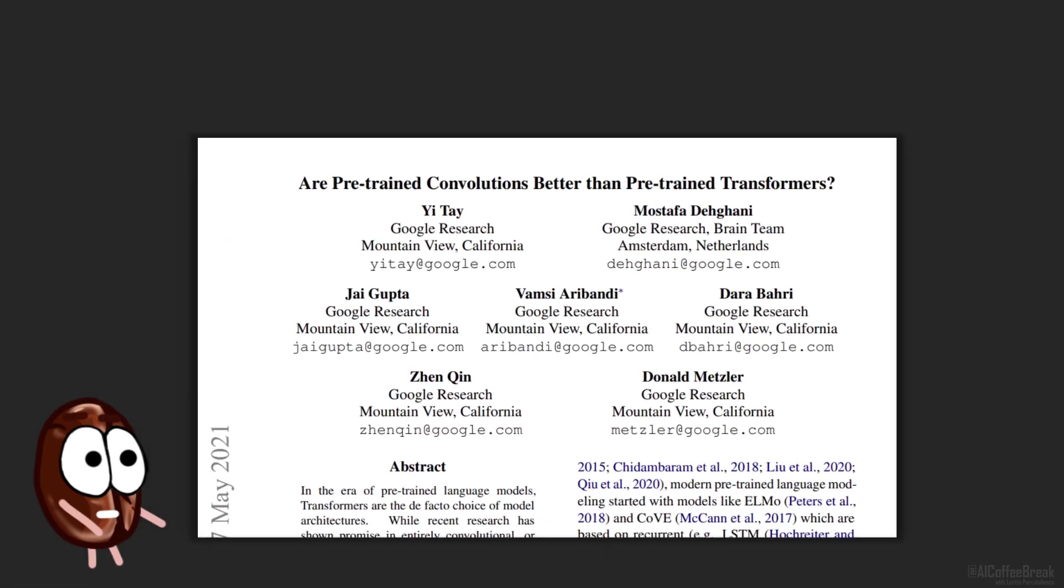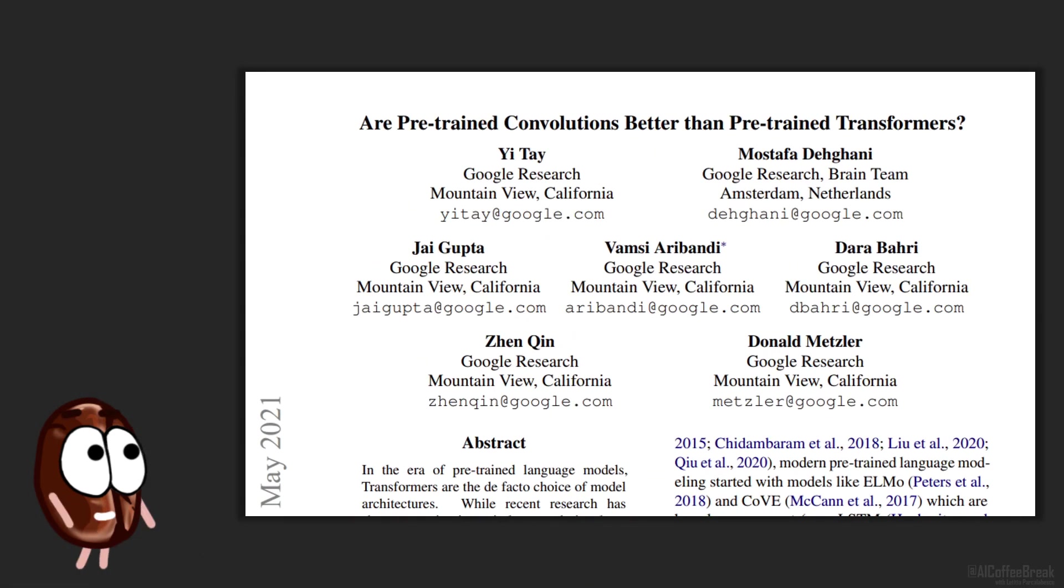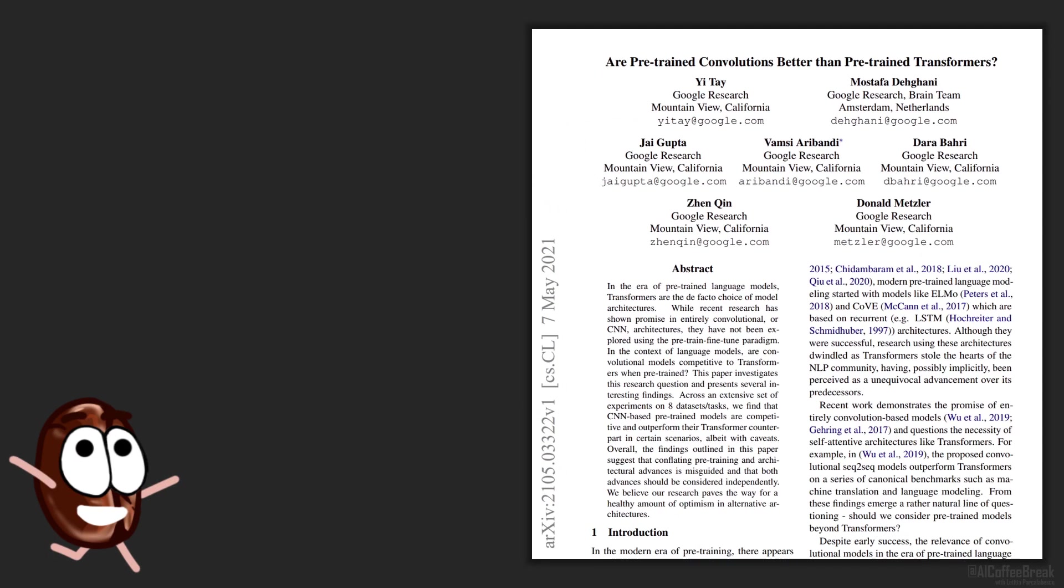Today we're discussing a paper that asks a very natural and interesting question: are pre-trained convolutional models better than pre-trained transformers? We'll find out how CNN-based models benefiting from the same amount of pre-training as transformers were found to be competitive or even outperforming transformers in certain experiments.